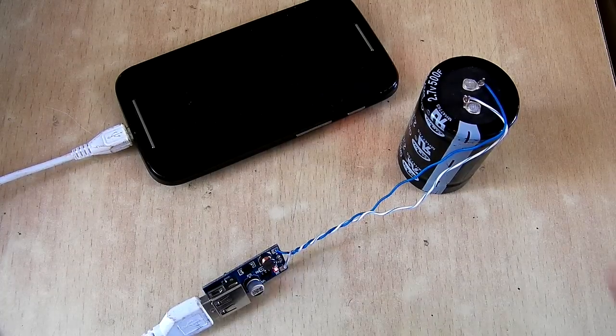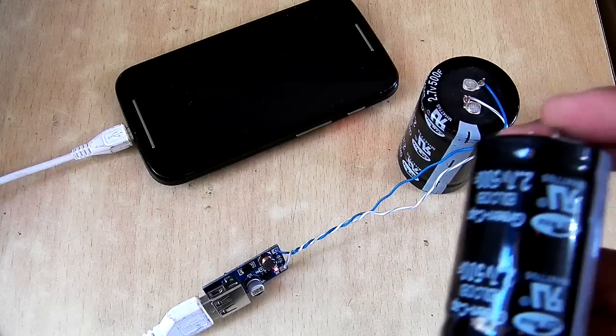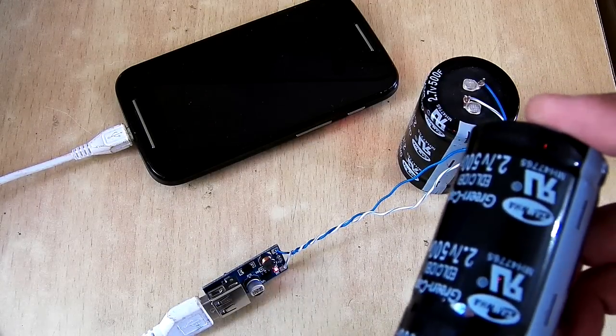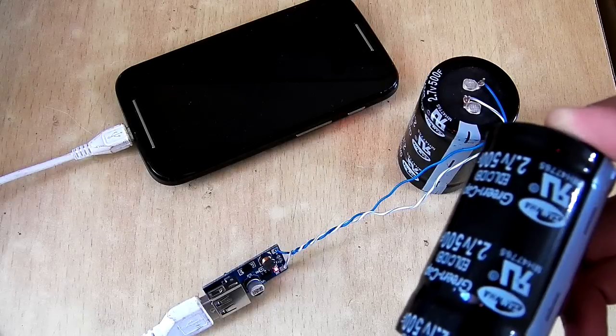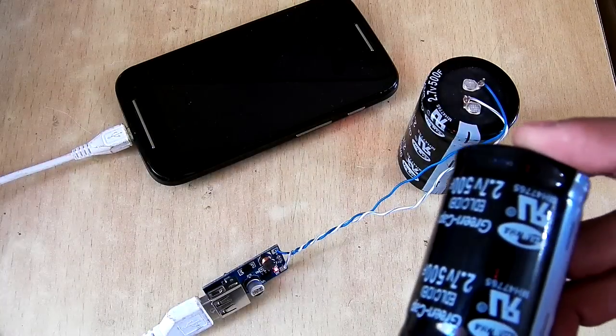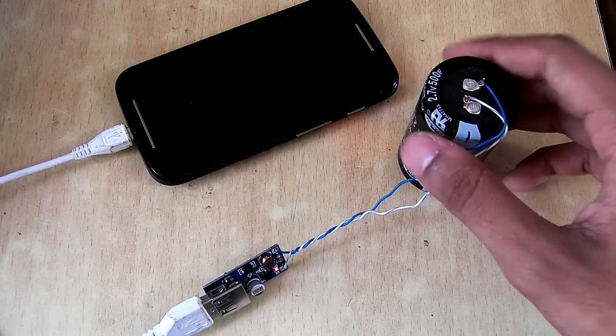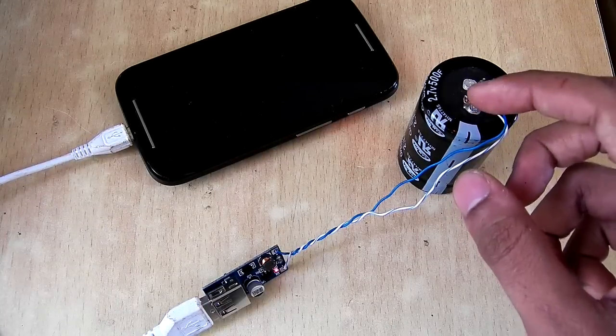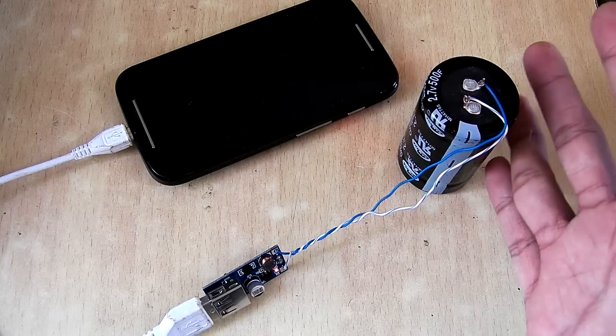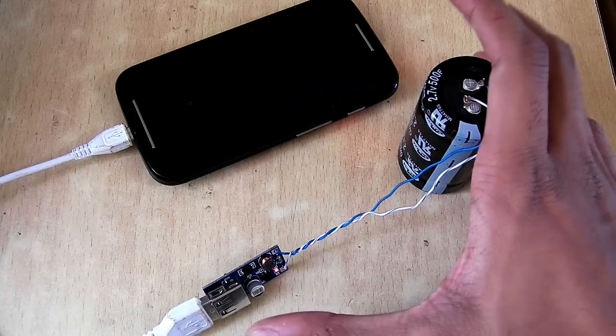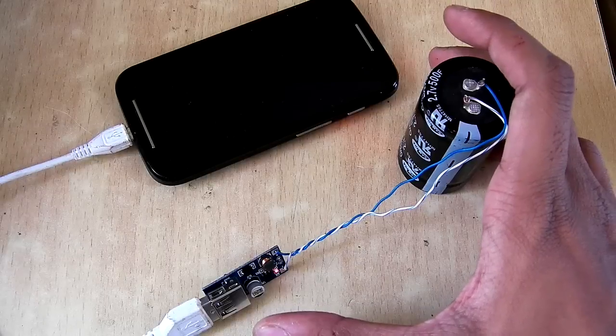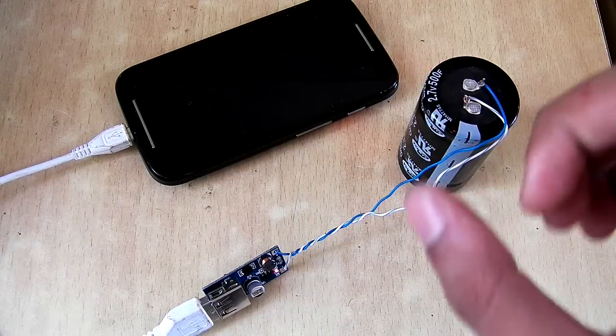For people who don't have time to charge their cell phones for longer time at their wall outlet and plug it in the wall socket charger, they can just use this method to charge their cell phone in 5 minutes and they can use this device like a power bank, and that might be helpful.